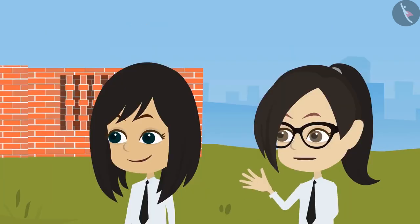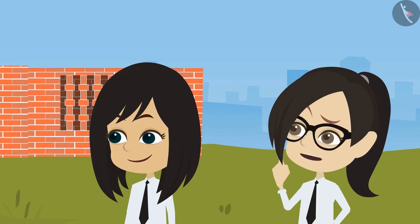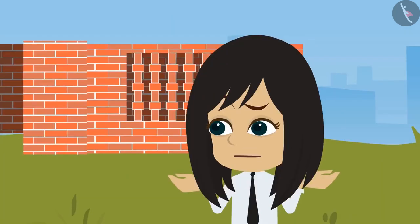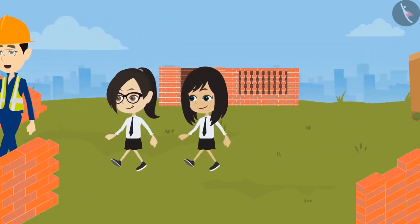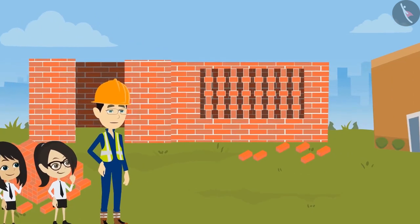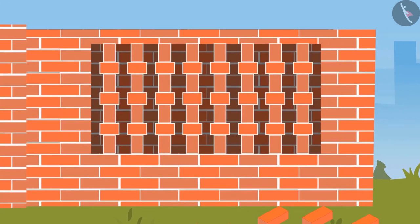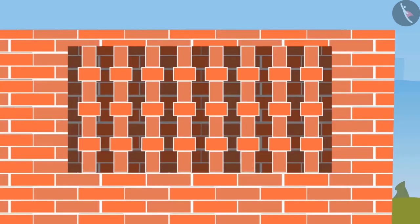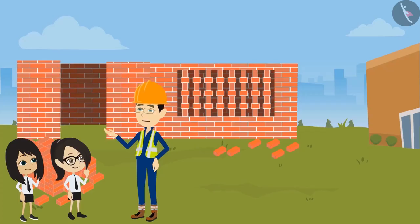Sir, where else do you use the brick pattern? We can also make vents using bricks. What is a vent? The gaps that are left in the wall for air circulation are called vents. See, we have also made some vents in your canteen wall. You can see many similar vents in buildings. I have made a pattern in this vent, and similarly, you can see very beautiful patterns in the vents of buildings.